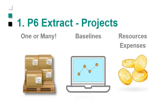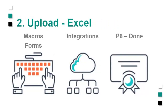When it comes to projects, you can extract one project or many projects, choose projects and/or baselines, and select resource assignments and expenses. Once you've extracted the information, you can manipulate it within Excel however you want — run macros, make changes, write formulas — then run it back into P6 and you're done.